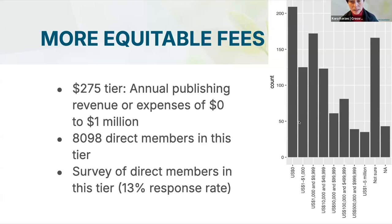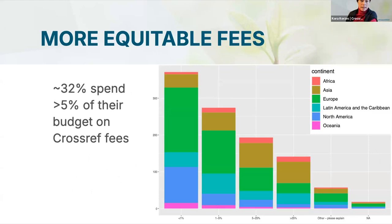The data shows that members in the zero to one million dollar revenue band seem to gravitate towards the lower end — more organizations have around zero to $10,000 or $50,000 in annual publishing revenue or expenses, with some closer to a million. We asked those direct members in the $275 tier what proportion of their total expenses they pay to Crossref in all fees, including membership fee and registration fees. For about a third of those members, it was less than 1%. However, a large group said they are paying 5% or above of their budget to Crossref.